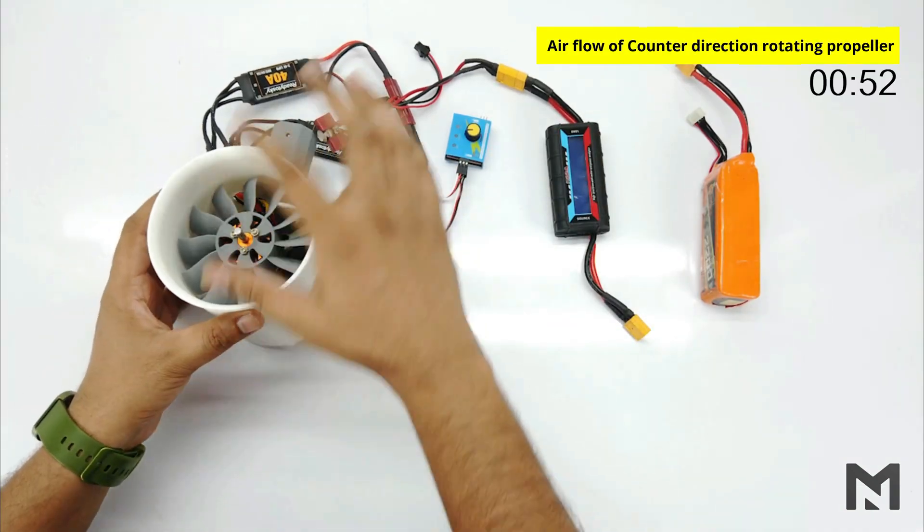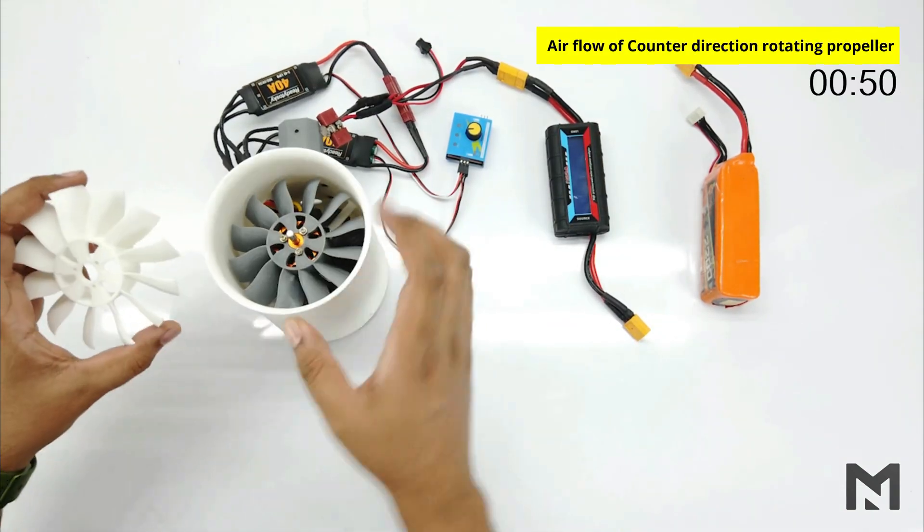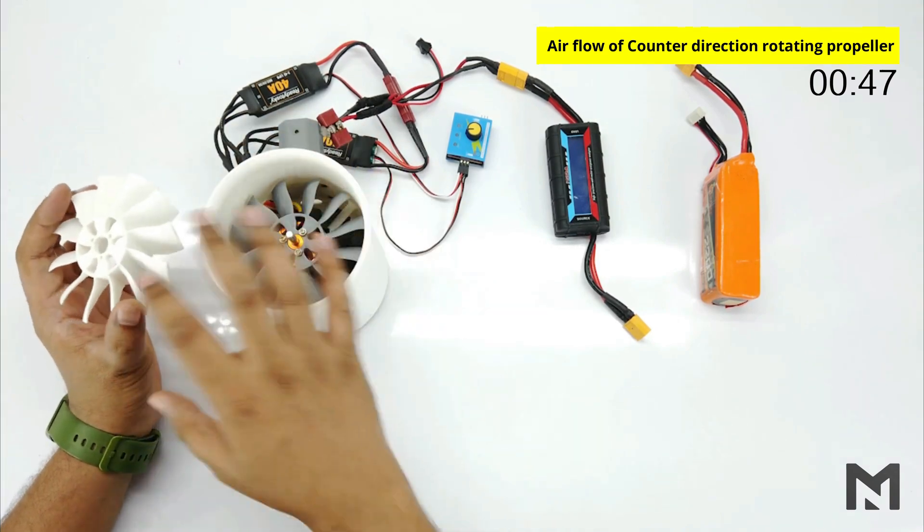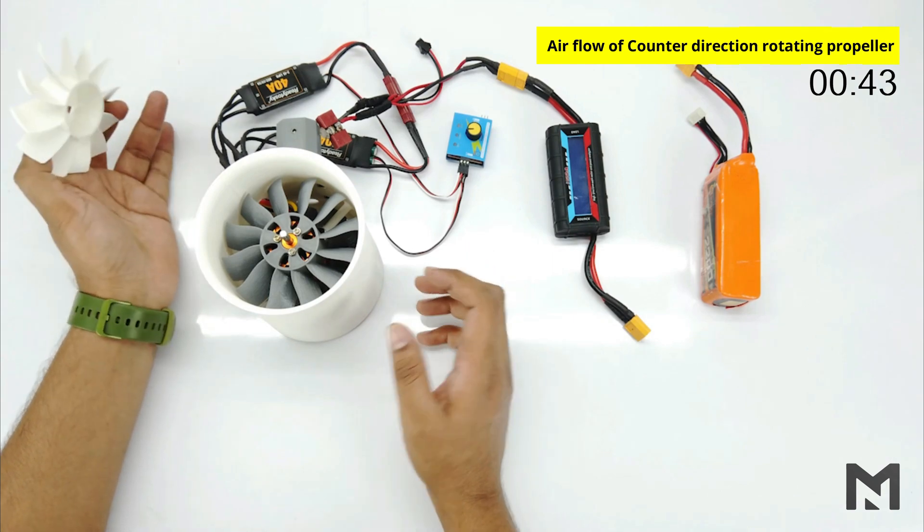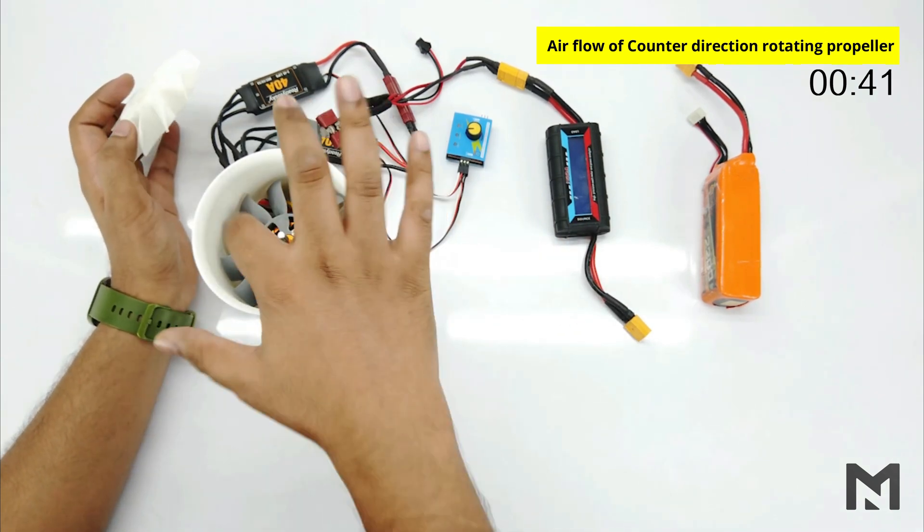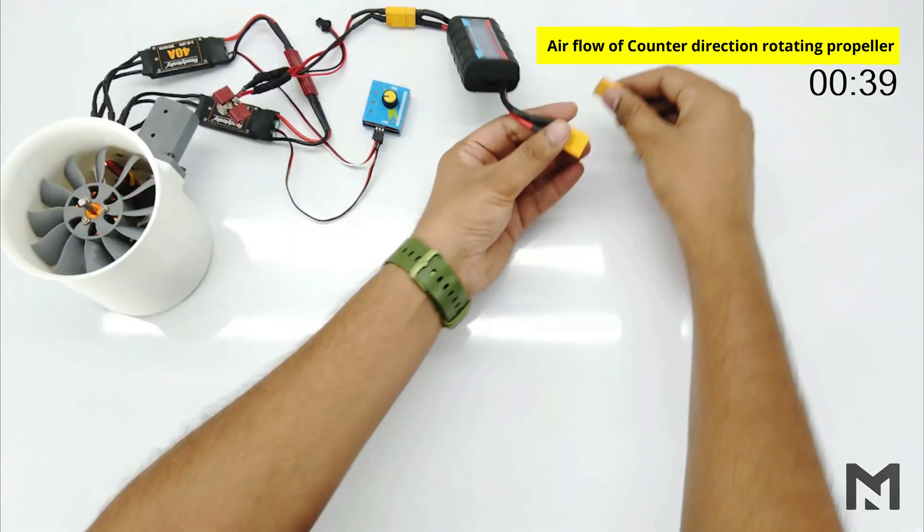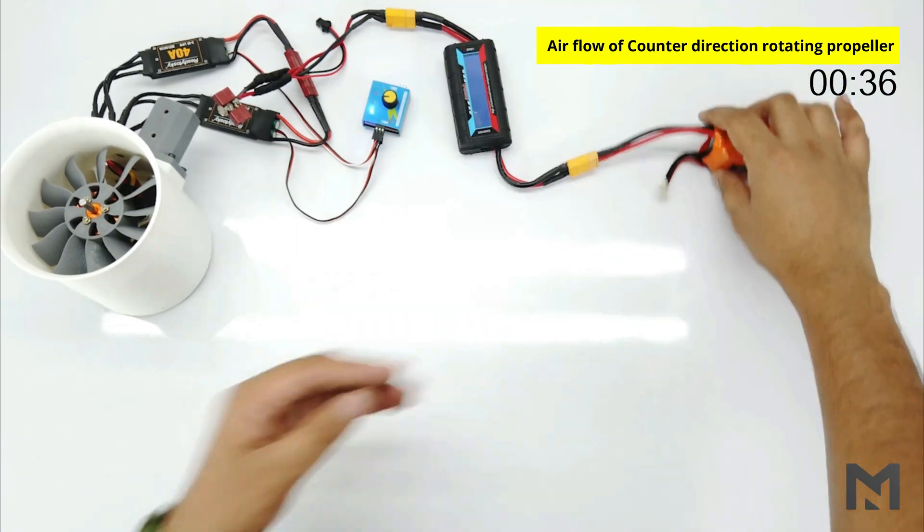So before the conclusion, let me show you its power. So we have noticed that in the same direction configuration, it didn't produce much thrust. It only produced a lot of noise. It is because of the generation of turbulent flow. And in fact the counter direction EDF was good. So I will connect it with a 4S battery and show you its thrust.